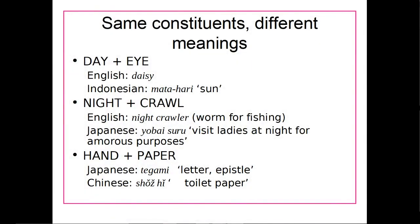We can also see the same constituents with different meanings — the opposite of what we just looked at. In English, 'day' plus 'eye' combined a while ago to form the word 'daisy.' In Indonesian, 'day' plus 'eye' means 'sun.' In English, 'night' plus 'crawl' means 'night crawler,' a worm used for fishing. In Japanese, the same compound means to go around at night looking for women. In Japanese, 'hand' plus 'paper' means 'letter'; in Chinese, 'hand' plus 'paper' means 'toilet paper.' The same words combining in one language can have a completely different meaning in another.